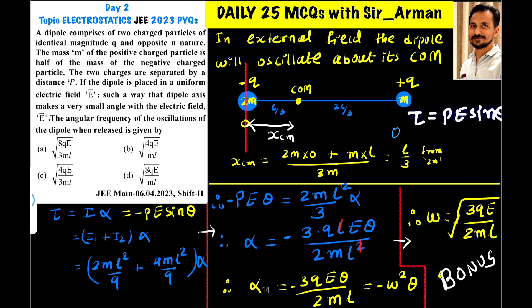For small angles we can write torque τ = pEθ. The dipole will then oscillate. When the dipole oscillates, it will always oscillate about its center of mass.